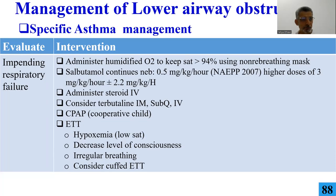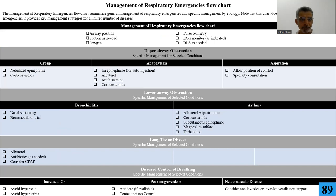If there is impending respiratory failure in asthma: administer oxygen to maintain saturation, consider continuous nebulization or inhaler every 5-10 minutes, give IV steroid, consider beta-agonist IV, consider non-invasive CPAP, and don't forget you can intubate. Once intubated, the patient needs sedation. It typically takes 12 to 36 hours to extubate an asthmatic patient after resolution of obstruction.